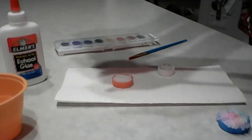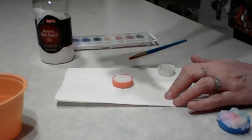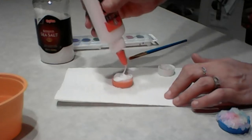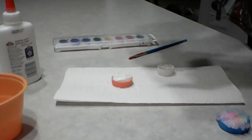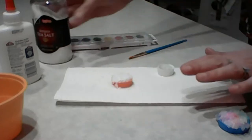And then one more time. This is going to vary depending on how big your bottle cap is. So I'm going to do this, cover my glue again with the sea salt.